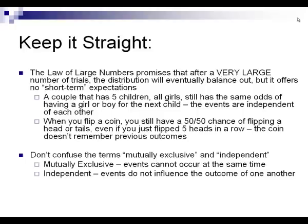The law of large numbers does not promise any results other than for a very large number of trials. It is not saying that if we run 10 trials, we'll get exactly 5 heads and 5 tails. If a couple has five children and they're all girls, it doesn't mean they have a higher chance of having a boy next — it's still a 50-50 chance. If you've flipped five heads in a row, the coin is still going to give a 50-50 chance on the next flip. Also, don't confuse mutually exclusive and independent: mutually exclusive means events cannot occur at the same time; independent means they don't influence each other's outcomes.